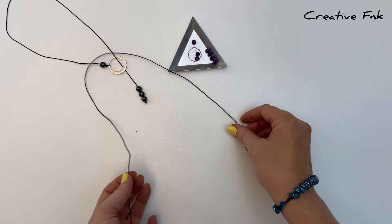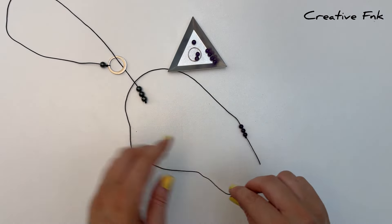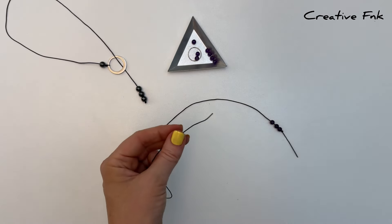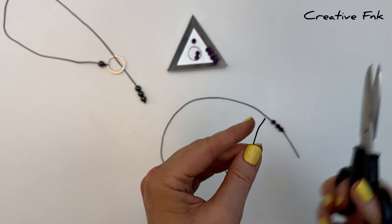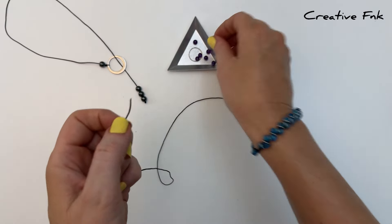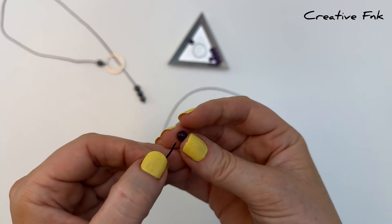Once you're happy with the beads on this end and your knot, then we can swap onto the other end. So I like one more bead on this end as well as my ring. Just cutting that thread on an angle again and then placing my next bead on.